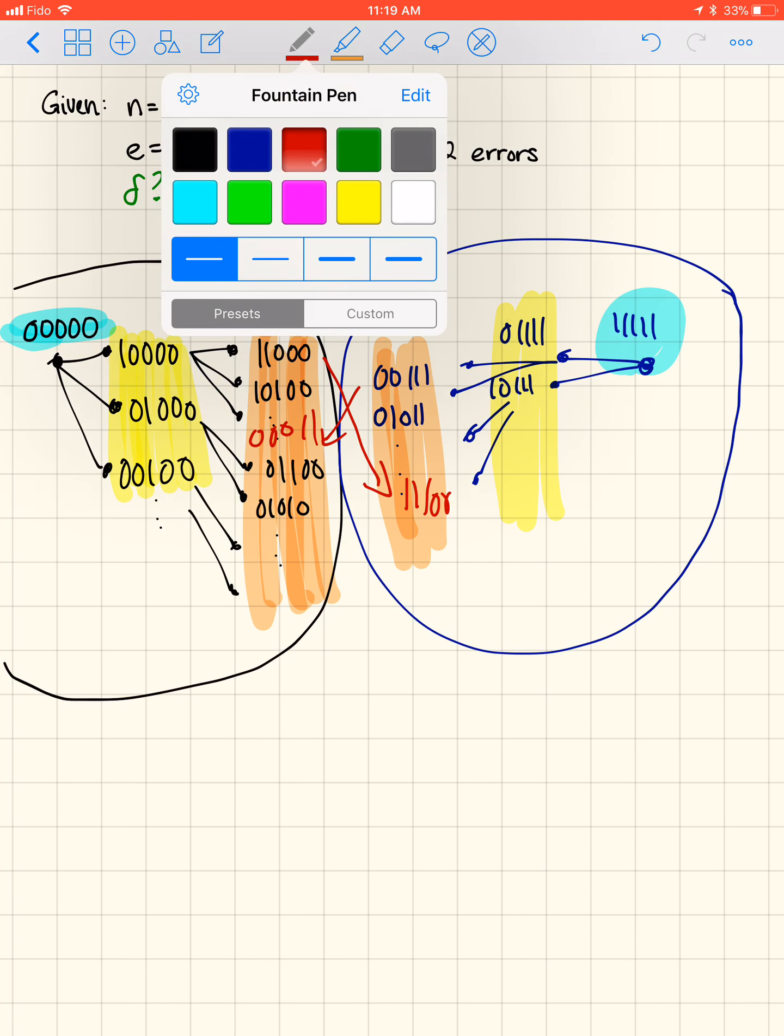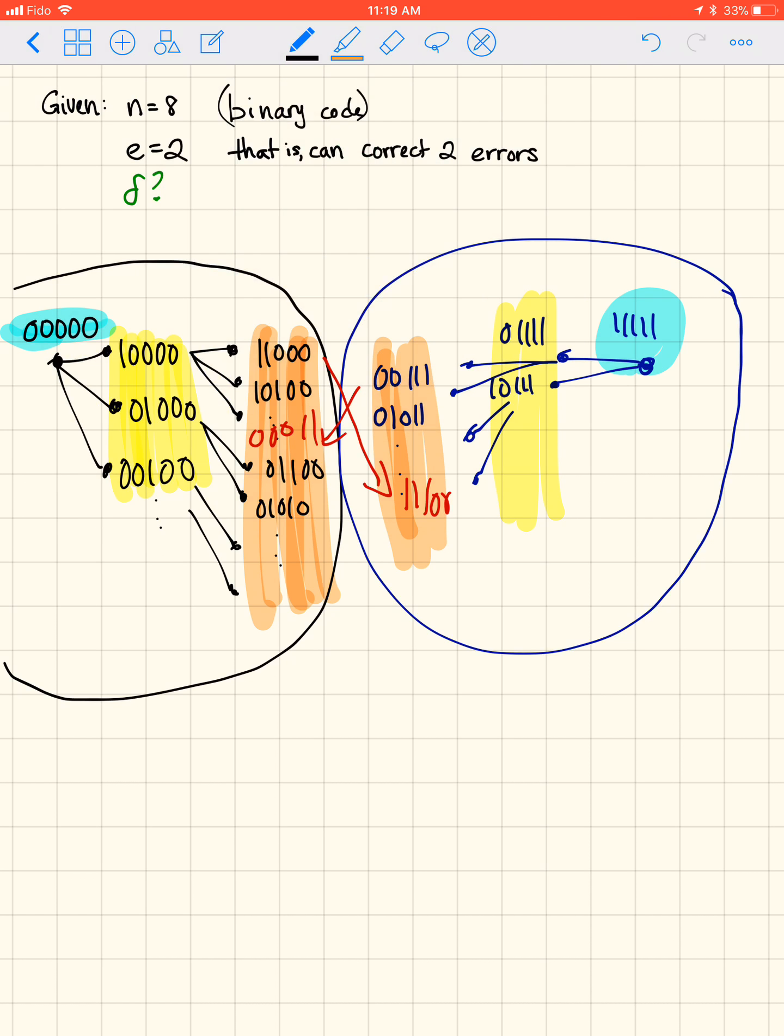So this is my clumsy way of trying to explain why the distance always has to be greater than or equal 2 times the numbers of errors you want to detect plus 1. And it's tempting to think that it's 2 times the number of errors if we want to correct 2 errors, and there are 2 code words that we're measuring the distance between. Shouldn't 4 apart be correct? 2 errors one way, 2 errors the other? But, oh, look, and I just drew it that way.